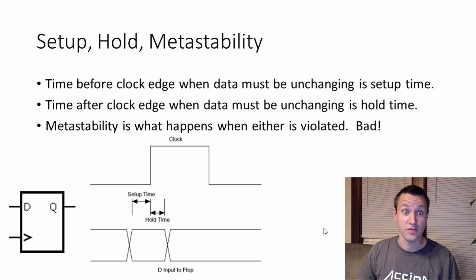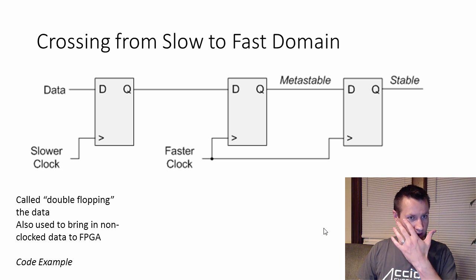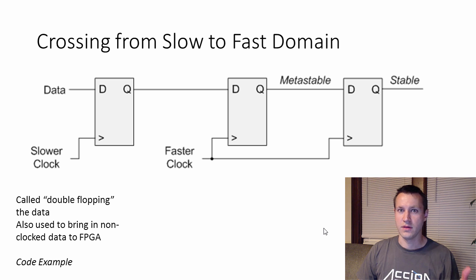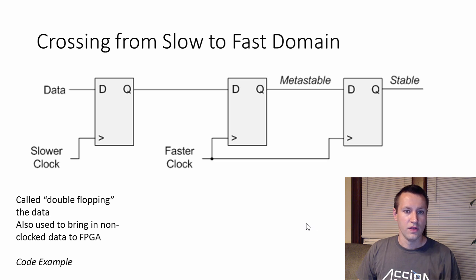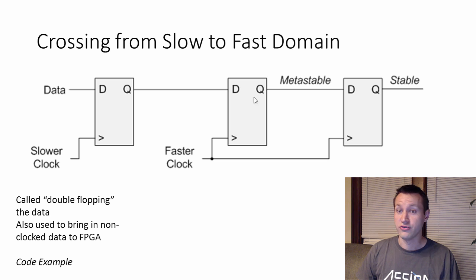So let's fix this problem in three ways. The first way: crossing from a slow clock domain to a fast clock domain — for example, from 10 to 20 megahertz. This is a simple solution. All you need to do is double-flop the data, or double-register the data.